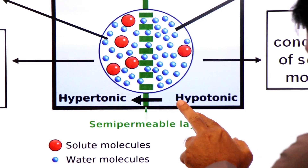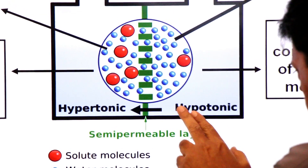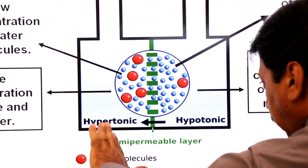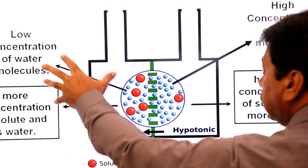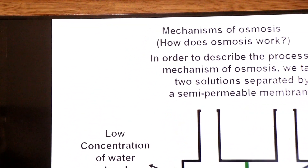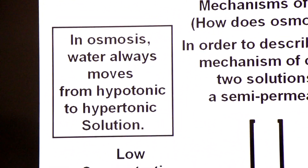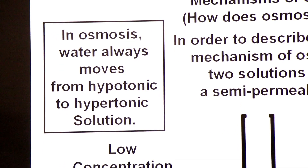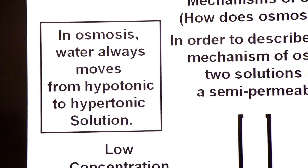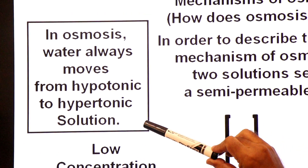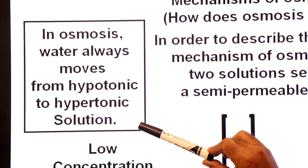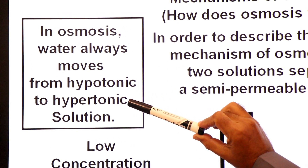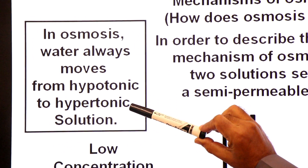In osmosis, water molecules always move from the hypotonic solution — which has a high concentration of water — to the hypertonic solution — which has a low concentration of water. Water always moves from hypotonic to hypertonic solution.